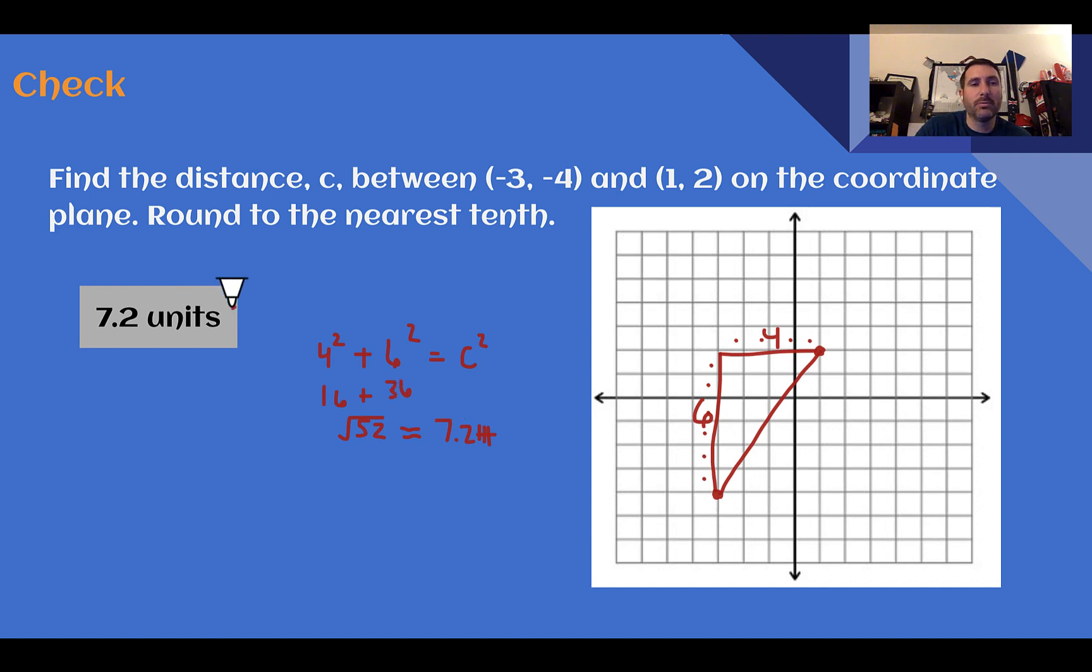7.2. And that's really all there is for finding distance on a coordinate plane. Plot your points. Create a right triangle out of it. Use the Pythagorean theorem. Do it again.